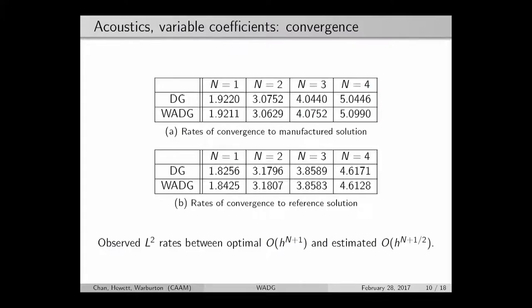These are the optimal expected rates of convergence that you would want, and this holds also for a reference solution, but you get slightly less because you can only prove a slightly lower rate of convergence. But in both cases, this weight-adjusted DG matches the DG method at a much greatly reduced storage cost.